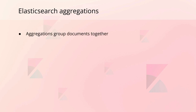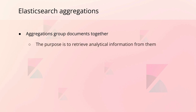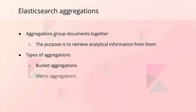Elasticsearch aggregations are a way of grouping documents together to retrieve analytical information from them. The aggregations are divided into different categories, so let's talk about those. Although there are four categories, we'll only talk about three of them now.